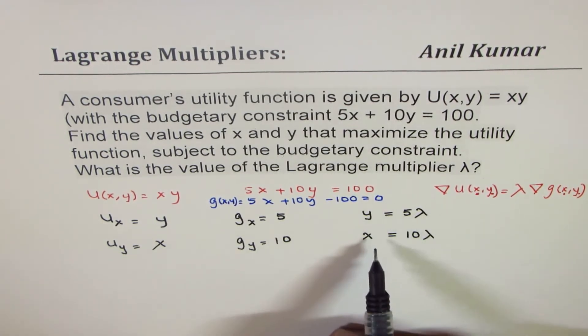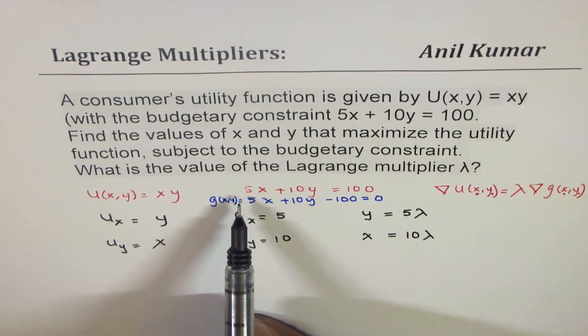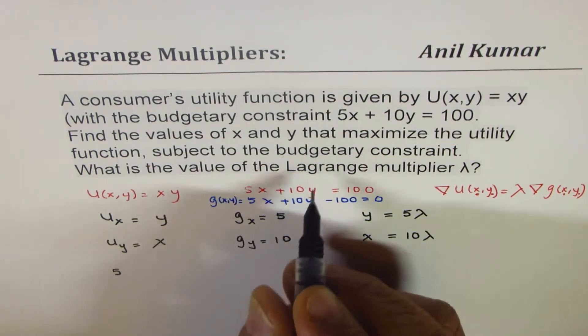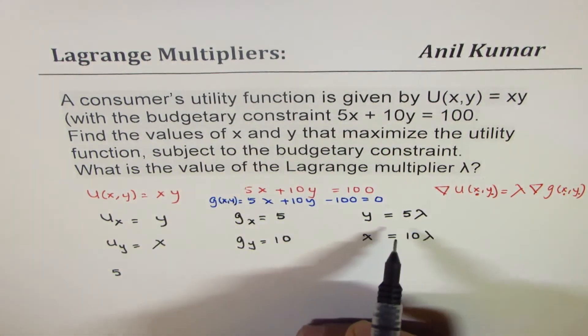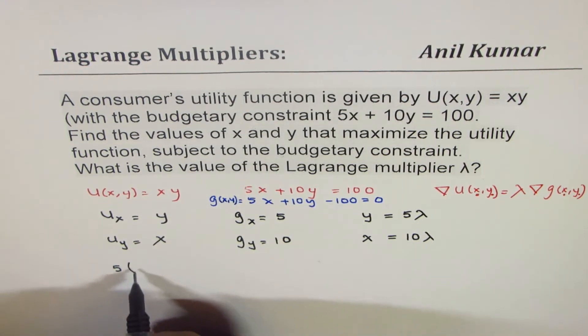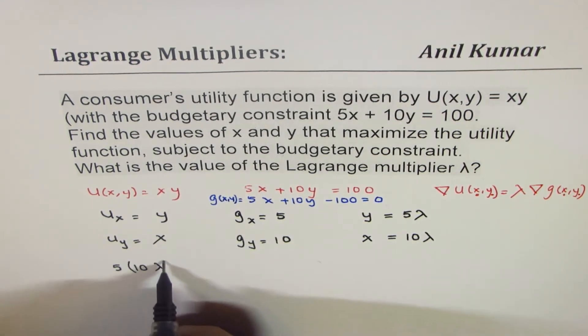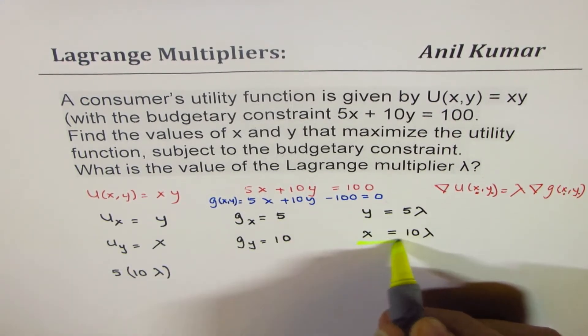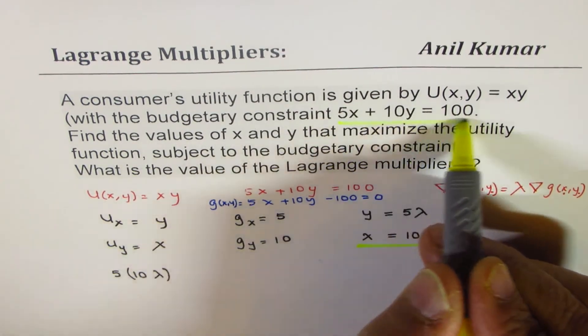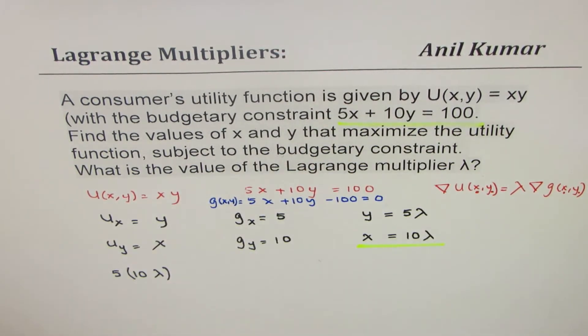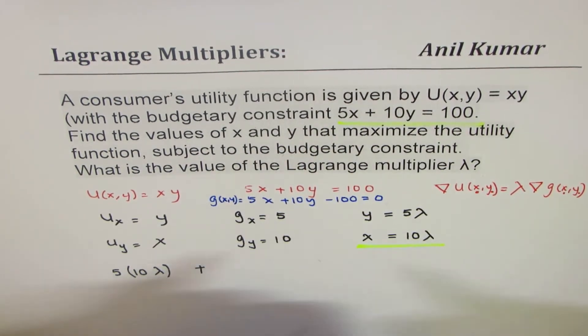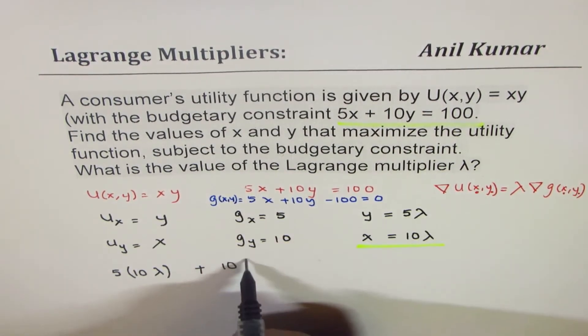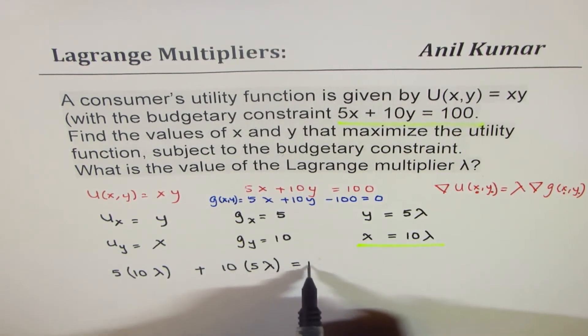Now, to find the value, what we can do is we can use the budgetary constraint, which is 5x plus 10y. So instead of x, I can write this as 10 lambda. So this is, I'm picking up the value of x from here. We are substituting in our utility function.